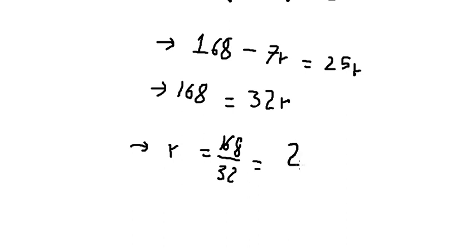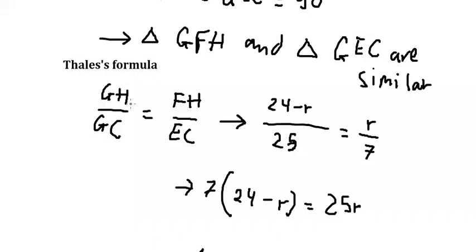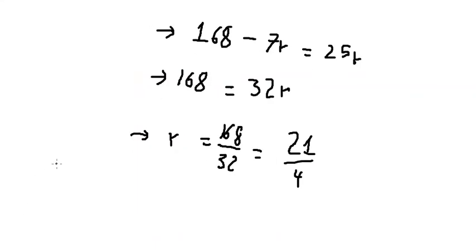We get r equals 21 over 4. Now we can find the area. This is a half of the circle, so we have 1/2 πr squared, and we have the final answer.